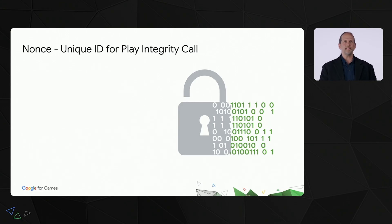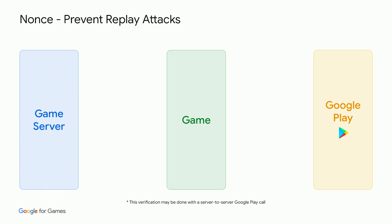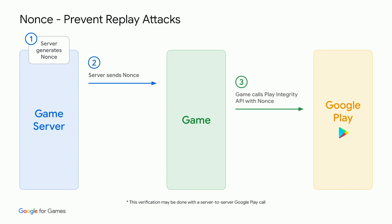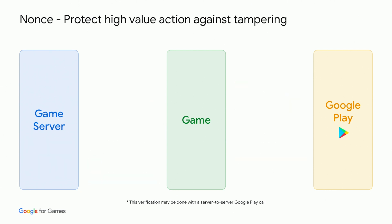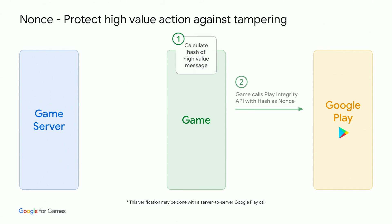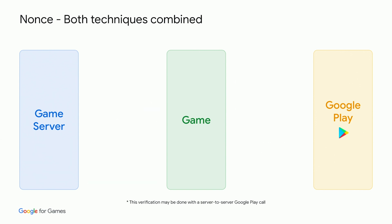The nonce — value used once — is typically a random number used to prevent replay attacks, but it can also be used to prevent high-value actions from tampering. When being used to prevent replay attacks, the server generates a nonce and sends it to the game client. The game calls Play Integrity with the nonce, and Google Play will create a signed response that includes the nonce that the game will return to the server for verification. One can also protect a high-value action from tampering by calculating the hash of a high-value message, using that as the nonce and having Play return the signed response with the hash, so that the server can verify the action. You can combine these two techniques to get both benefits.